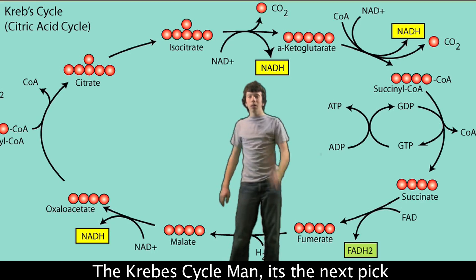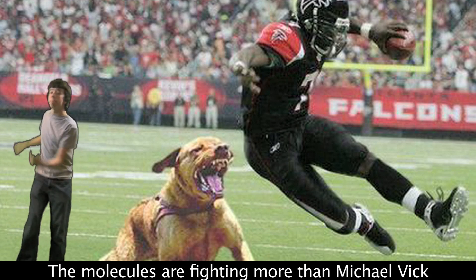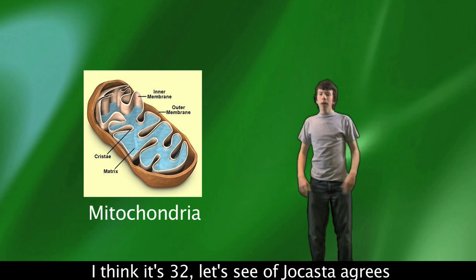The Krebs cycle, man, is the next pick. The molecules are finding more than Michael Bick. And the mitochondria, man, produces ATP. I think it's 32,